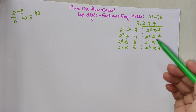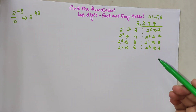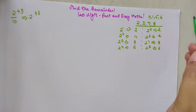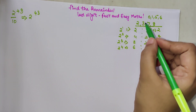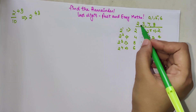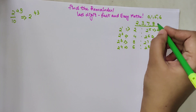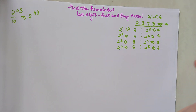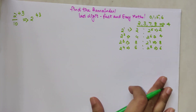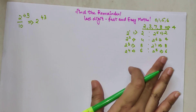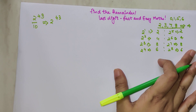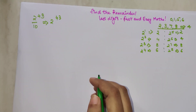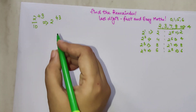The last digits of powers of 2 cycle through 2, 4, 8, and 6 — you cannot have any other last digit. So after every 4th power, the last digit repeats. For the digits 2, 3, 7, and 8, the power cycle length is 4. We'll see this for each of them, but let me first explain using the example of 2.